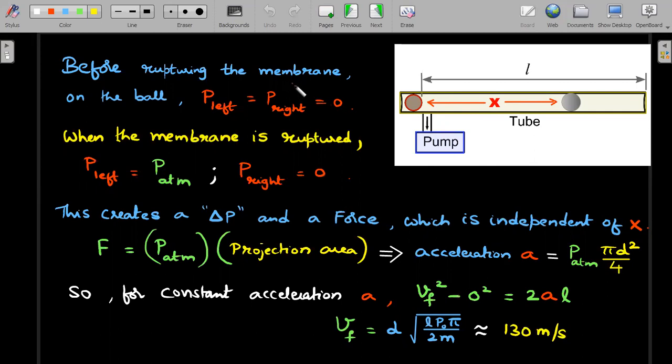So before rupturing the membrane on the left side, you could see there is a left side end, there is a membrane which can be easily ruptured. So before rupturing, on either side of this particular ball, the pressure on the left and right side would be equal to zero. But once the membrane is ruptured here, the air, which is atmospheric in nature, flows on this side. And whereas on the right side, there would be no pressure, so which means the push of this atmospheric pressure itself acts like a force which pushes the bullet towards right.